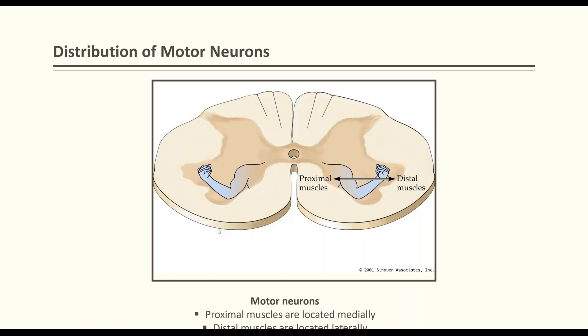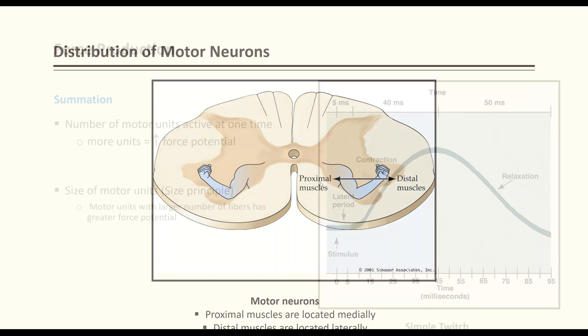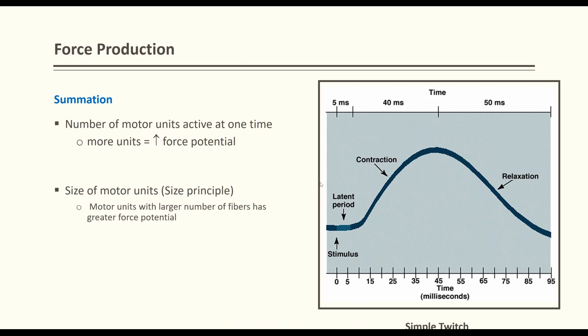In the brain's homunculus, the foot area is in the midline and the hand and face are on the outside. Similarly, in the spinal cord homunculus, proximal muscles are represented more medially and distal muscles more laterally. If the outer part of the spinal cord is damaged, the patient will not be able to move the hand or feet. Central cord syndrome or central damage will affect more proximal muscles — deltoid, shoulder, hamstrings, and quadriceps.